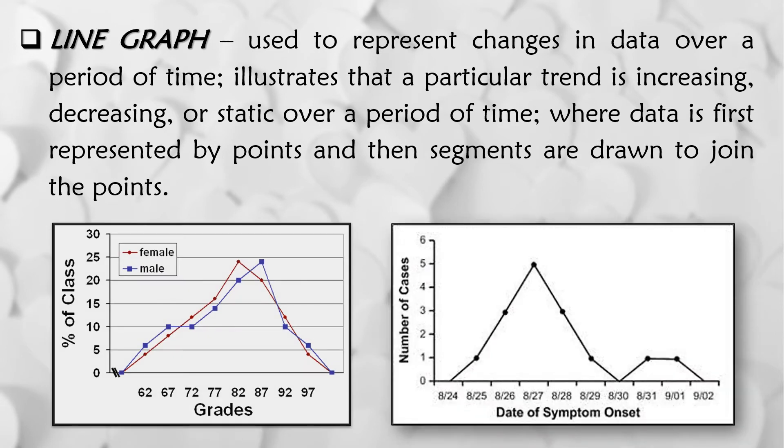So ito yung mga halimbawa ng line graph. So kapag magpa-construct or magda-drawing ng line graph, unang gagawin is i-plot yung mga points. So halimbawa sa 62, iyon yung grades or yung grade. And then yung percent ng klase na nakakuha ng grade na 62, halimbawa sa lalake, which is yung blue, is halimbawa nasa 6%. So nag-plot muna ng points and then syaka kinonect gamit ang lines.